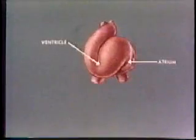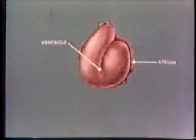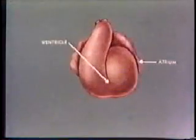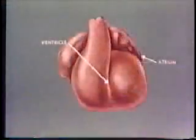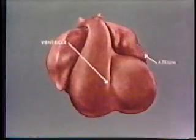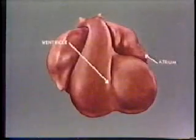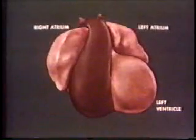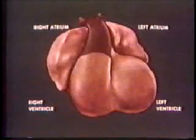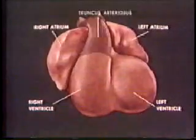As development continues, the ventricular region swings back to the midline, expands and grows in length to cover the atrium and great veins. Extensive sacculations projecting laterally will ultimately become the right atrium and left atrium. The future left ventricle lies to the left of the interventricular groove and the embryonic right ventricular or bulbo-conus region communicates with the truncus arteriosus.